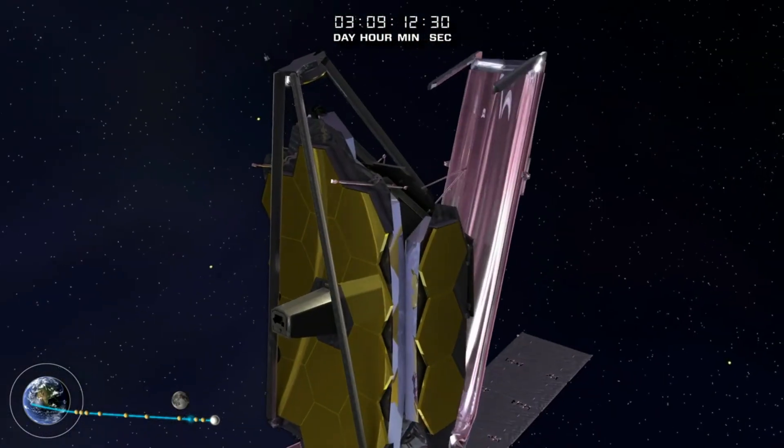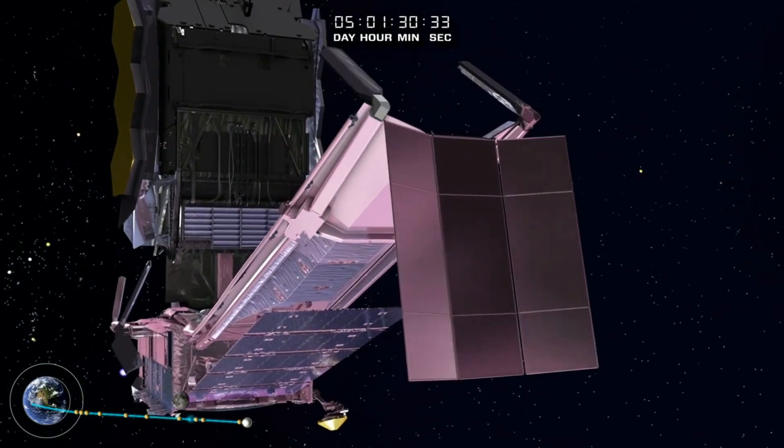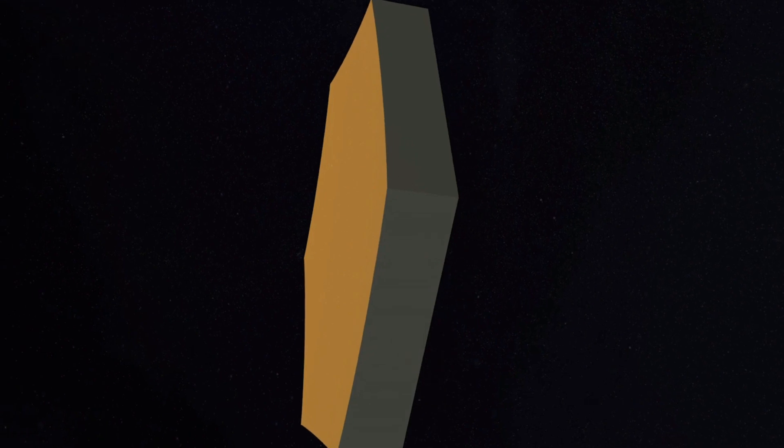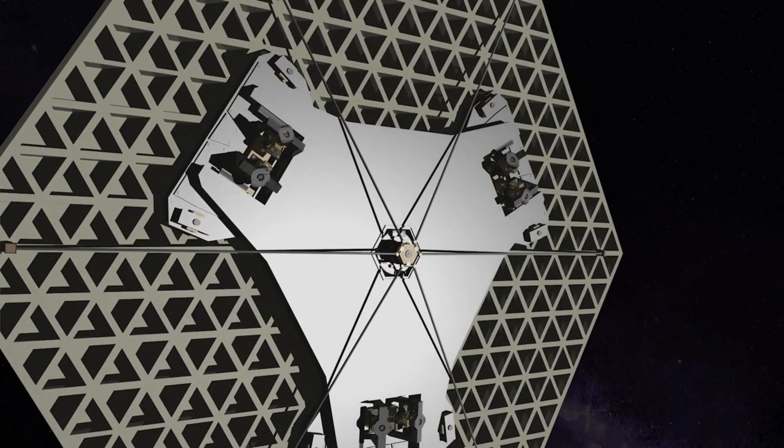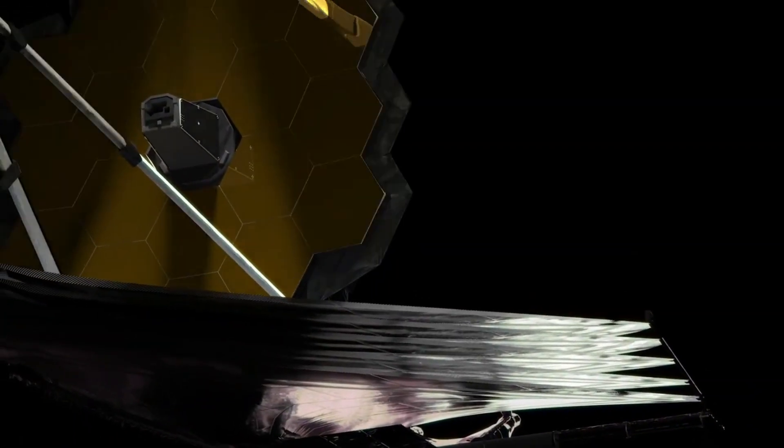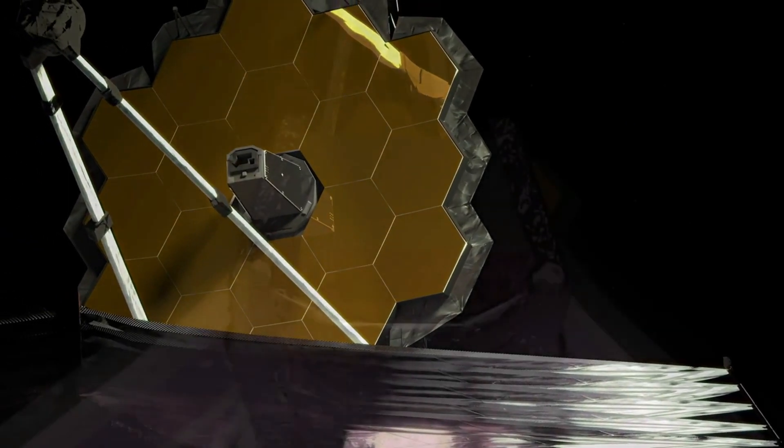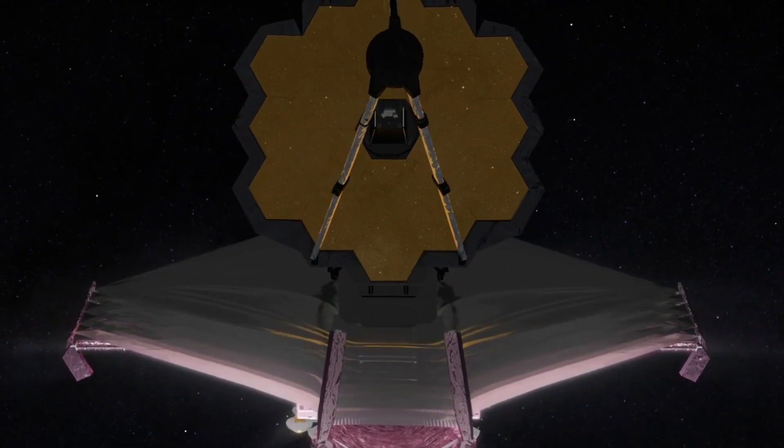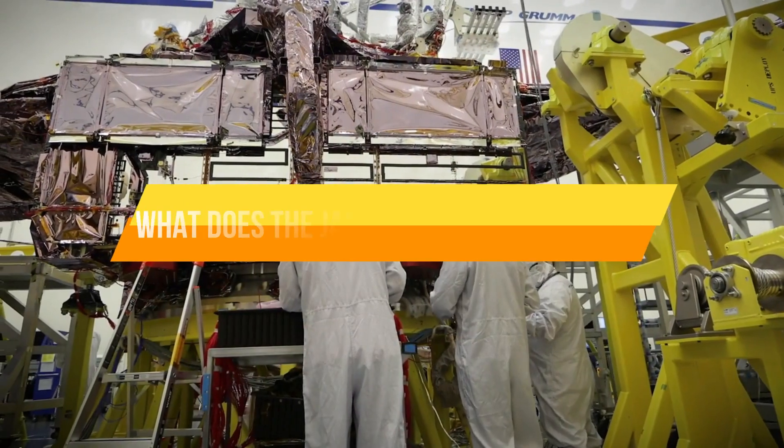There are 300 single points of items across 7,000 parts, and 178 release mechanisms. That means that if only one of these operations goes wrong, the entire mission was useless. Unlike Hubble, it's too far away to go up and fix. It's going to take 29 days to release all of the mechanisms. Assuming the whole thing works out fine, what does the James Webb Telescope do?